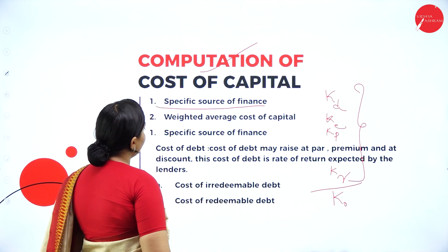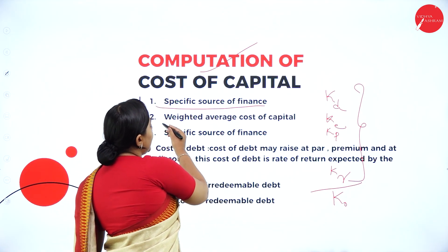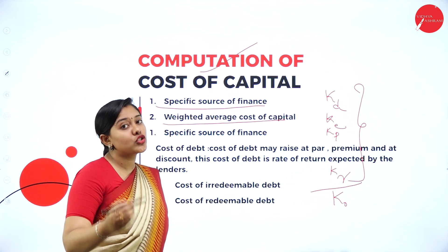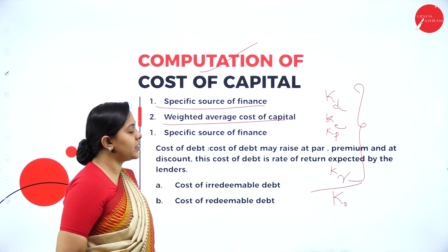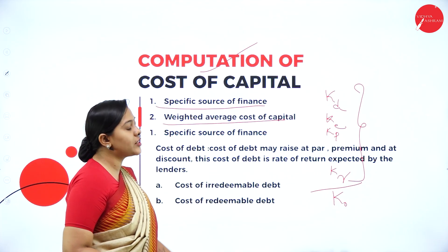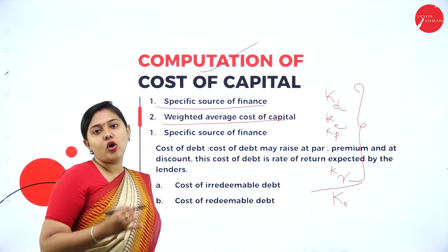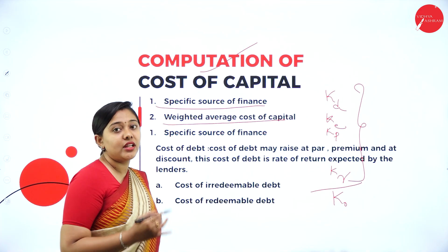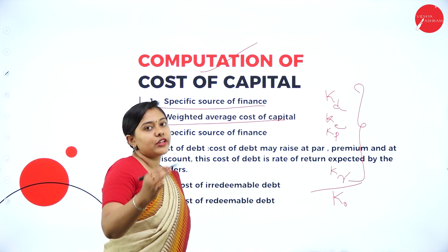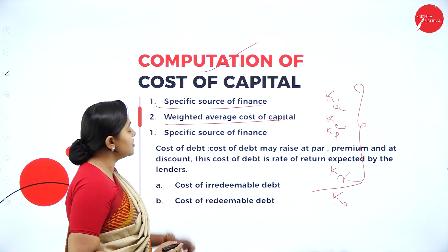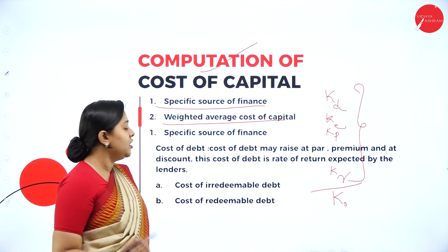Next, you need to calculate the weighted average cost of capital, which is also called the overall cost of capital. The first specific source of finance is cost of debenture. Cost of debt may be raised at par, at a premium, or at a discount.